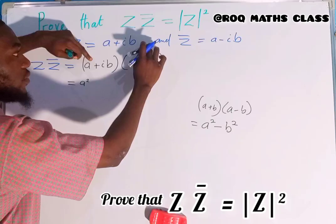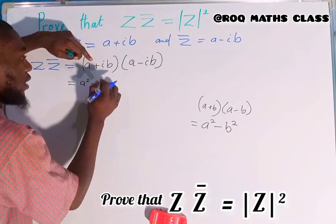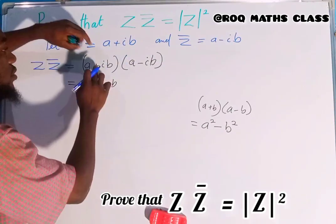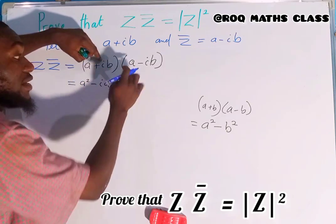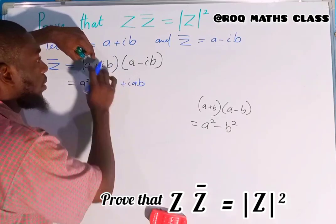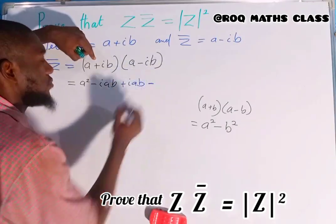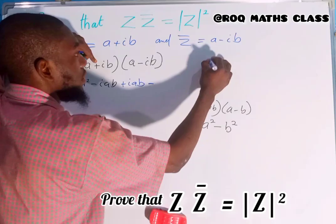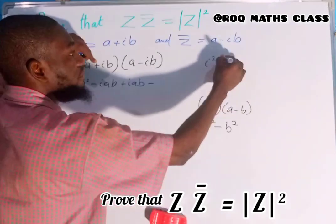A times minus ib gives minus aib. Plus ib times a gives plus aib. Then ib times ib gives i²b². b times b is b², and i times i is minus one.